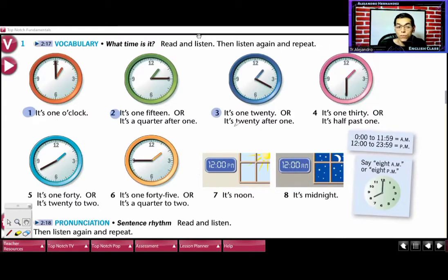Number three: it is one twenty, or it is twenty after one. Number four: it is one thirty, or it is half past one. Number five: it is one forty, or it is twenty to two.